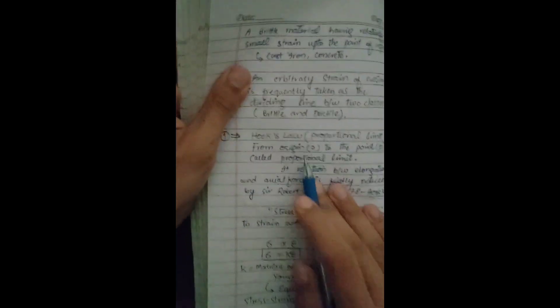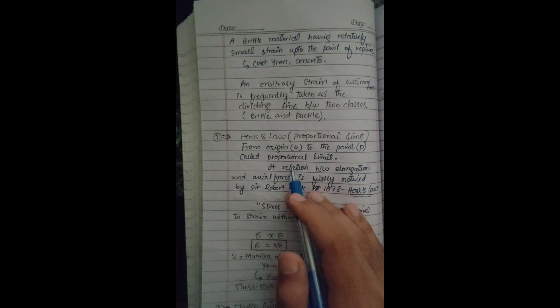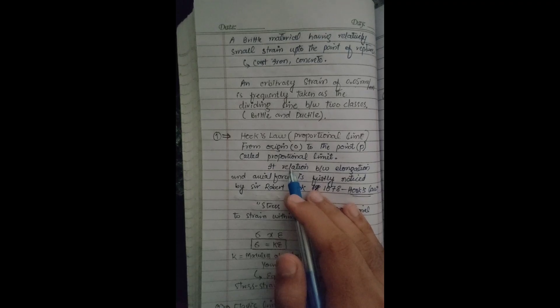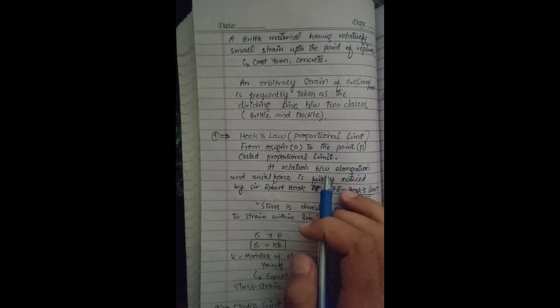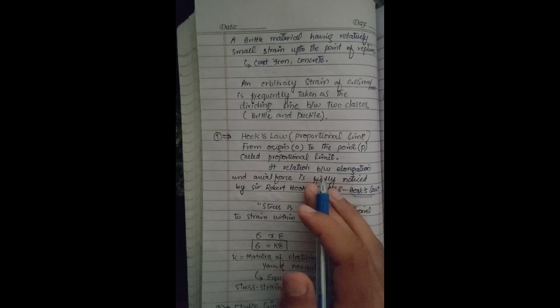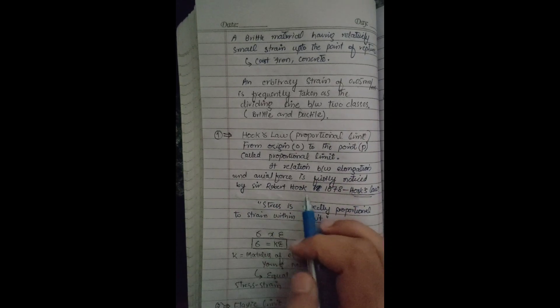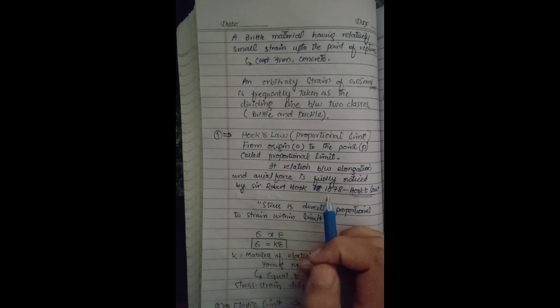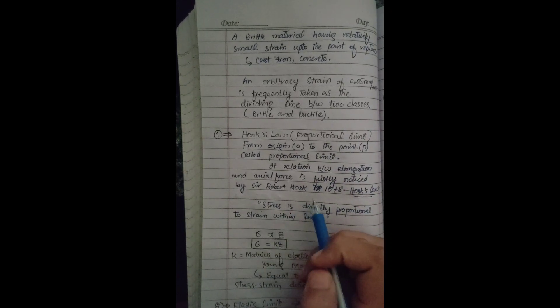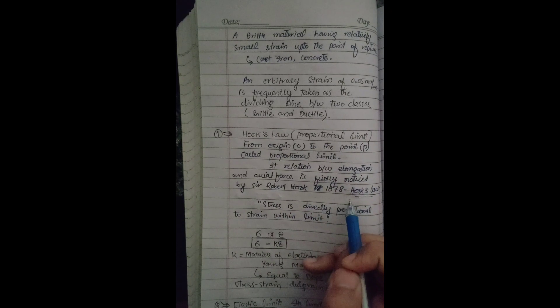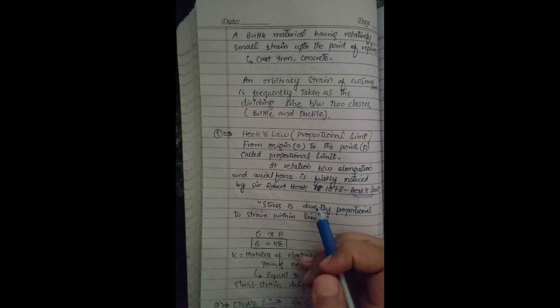Now, Hooke's law — also called the proportional limit — is the first point on the stress-strain diagram. From the origin O to point P, we call it the proportional limit. This is always a straight line, showing that Hooke's law is applicable. The relation between elongation and axial force was personally noticed by Sir Robert Hooke in 1678, and we call it Hooke's law.